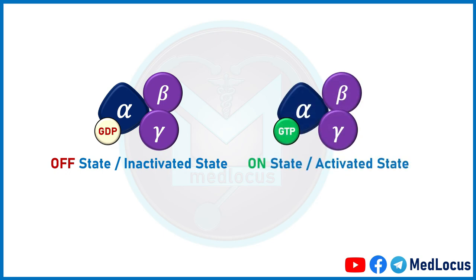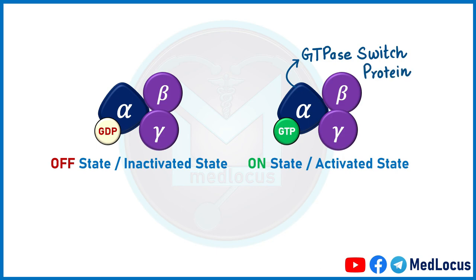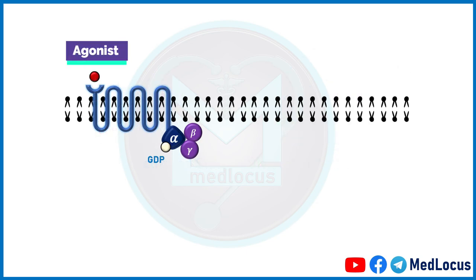The activated GPCR acts as a GEF, or guanine nucleotide exchange factor, and converts GDP to GTP. The alpha subunit of G-proteins becomes GTP-bound and turns into the on state — it gets activated. Because of this switch between GTP and GDP, the alpha subunit is also called a GTPase switch protein. When an agonist binds to the GPCR, a conformational change occurs within 50 milliseconds.